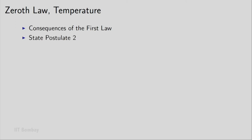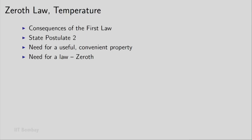Then we will quickly look at another state postulate — let us call it state postulate 2. Then we will come to the need for a useful, convenient property to handle some situations that we come across. And naturally in thermodynamics, a property is defined by a law. So we need a law — we call this the zeroth law.